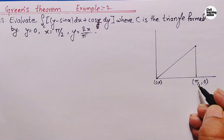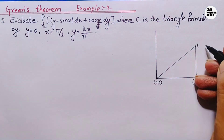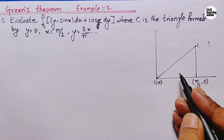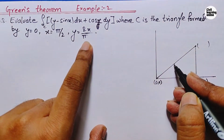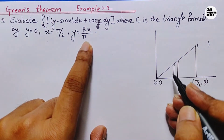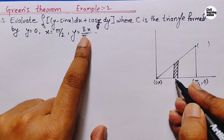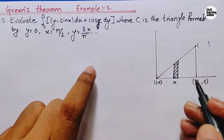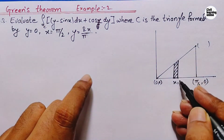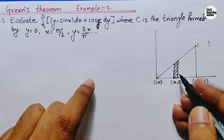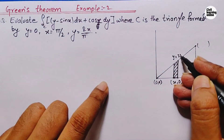The point is (pi/2, 0). Similarly, at x equals pi by 2 we will have some value of y. We have another equation y equals 2x upon pi. On this line, at x equals 0 we have considered a small strip of this triangular portion. Here y is 0 on the x-axis, and on the slanted line the value of y equals 2x upon pi.